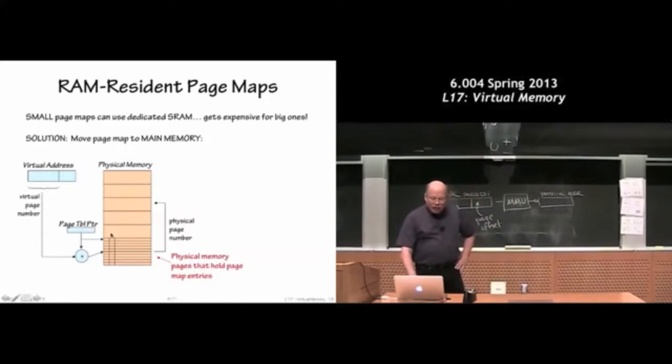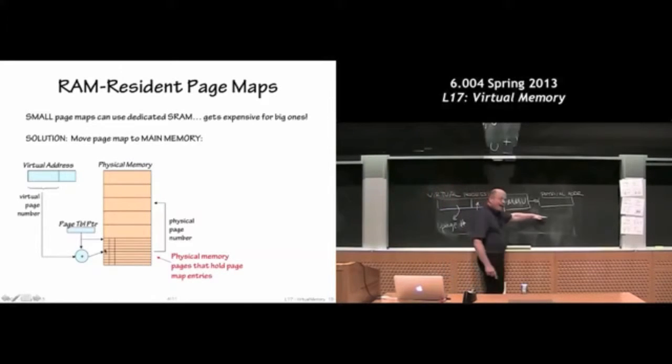So I'll have a special register in my machine called the page table pointer, which points to the first element or the zeroth element of the array. And then I'll add the virtual page numbers as an index into that array and come up with a particular memory location to look at in main memory.